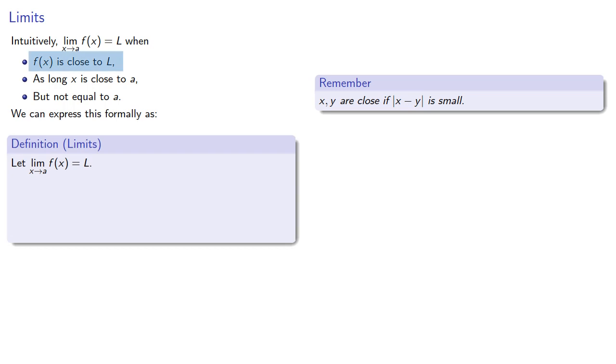We want f of x to be close to L. So we can make the difference between f of x and L less than some error, epsilon.